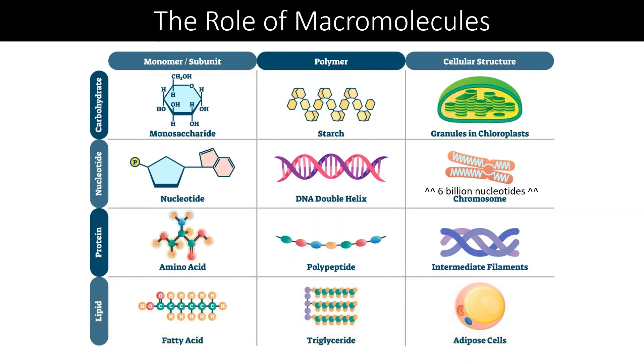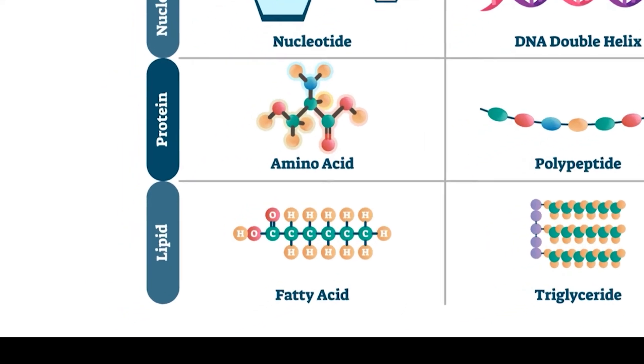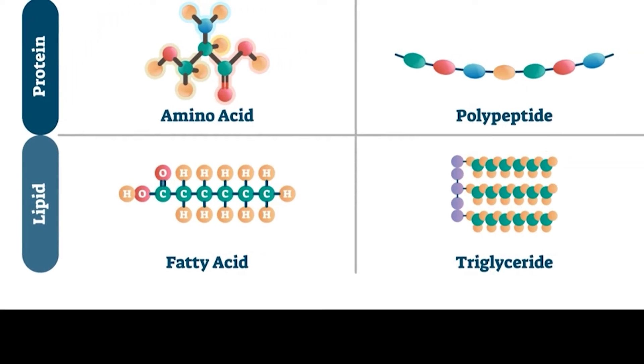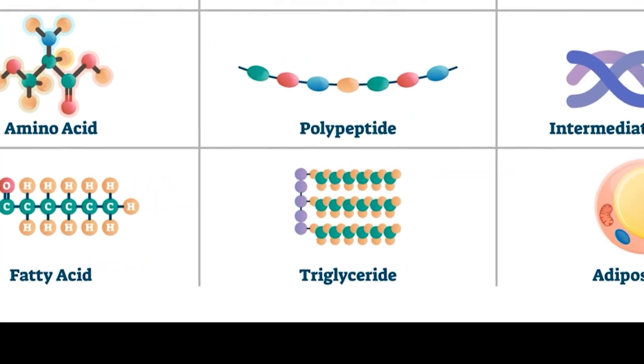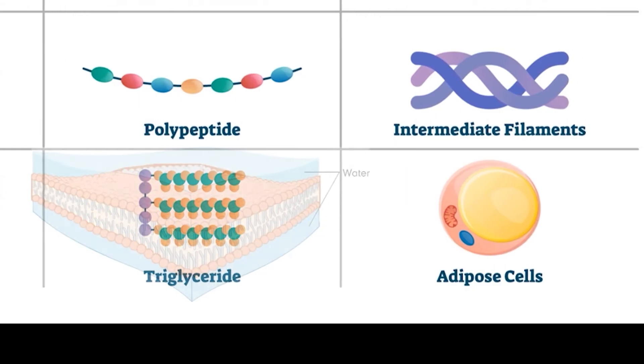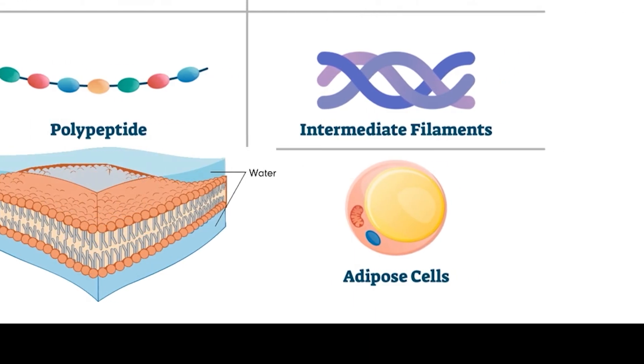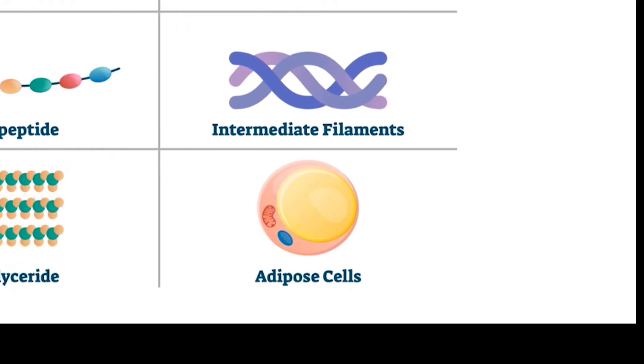Lipid monomers, known as fatty acids, combine into much larger macromolecules. Lipids can both store energy as polymers like triglycerides and create the lipid bilayer with phospholipid polymers. The lipid bilayer creates a barrier around the cell that allows it to maintain a specific internal environment.